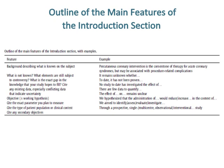There are few data to quantify the effect — or it remains unclear. The objective should include both a positive and negative working hypothesis. Cite the exact parameter you plan to measure and the type of patient population or clinical context: 'We hypothesise that the administration of [X] would reduce or increase [outcome] in the context of [Y].' State whether you aim to identify, assess, evaluate, or investigate, through a prospective, single- or multi-centre, observational or interventional study. Also cite any secondary objectives.